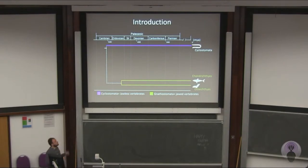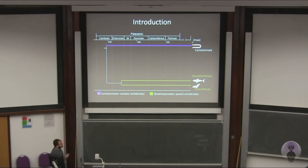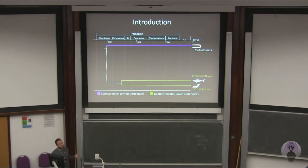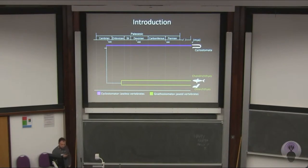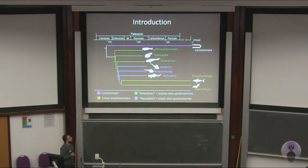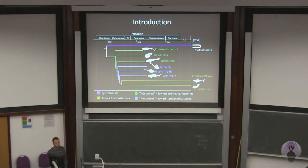Today vertebrates are represented by two different groups: the cyclostomes, the jawless fish, and the gnathostomes — chondrichthians like sharks, and osteichthians, bony fish and tetrapods. These two groups are very different in morphology, so if we want to understand how they evolved from their ancestors using just a living record, it's very difficult because there is a big morphological gap between them. Fortunately, we have several fossil forms, especially from the Paleozoic, that can fill this morphological gap.